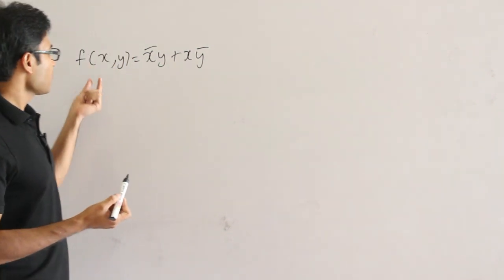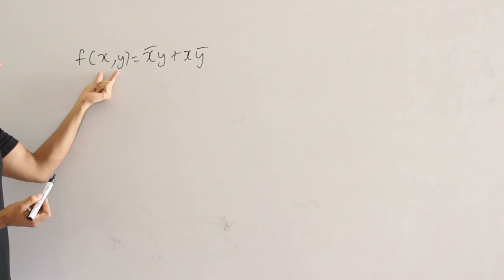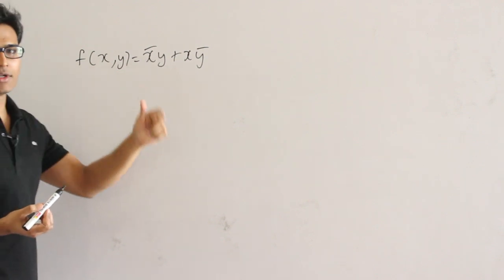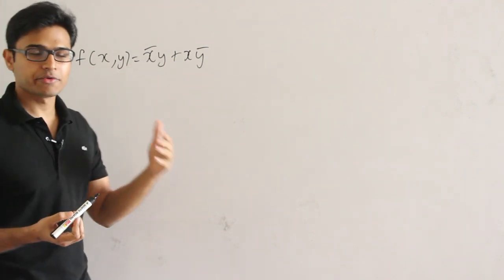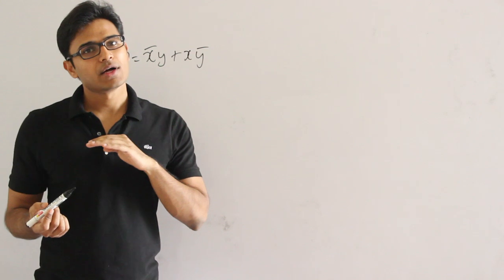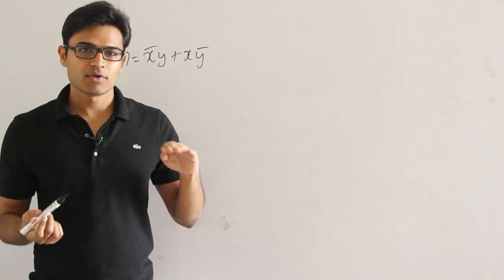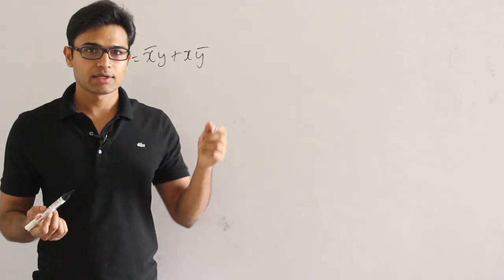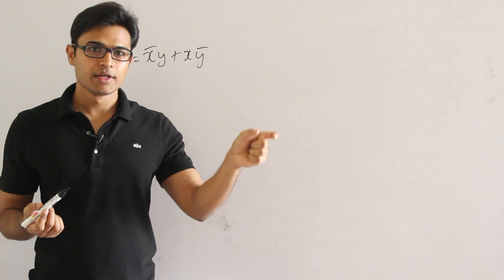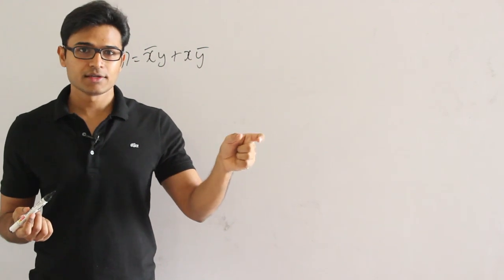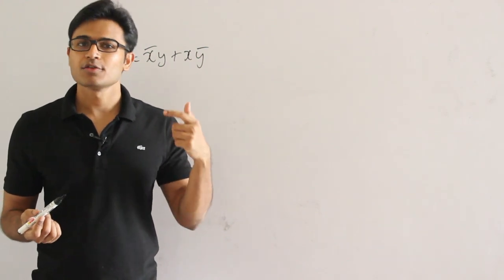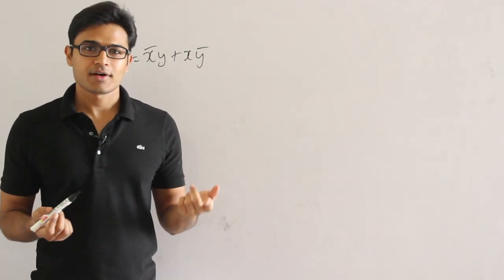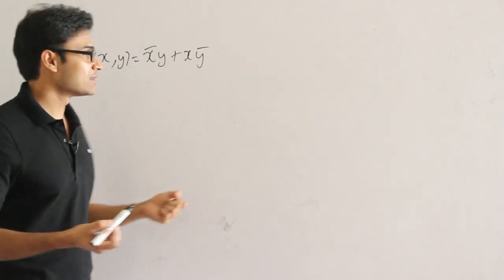If I have two variables, the complement should have only one variable. So the only option is to make both variables the same so that you get a function in one variable. If you are lucky, that function turns out to be the complement. If you are not lucky, then you have to use some other method.